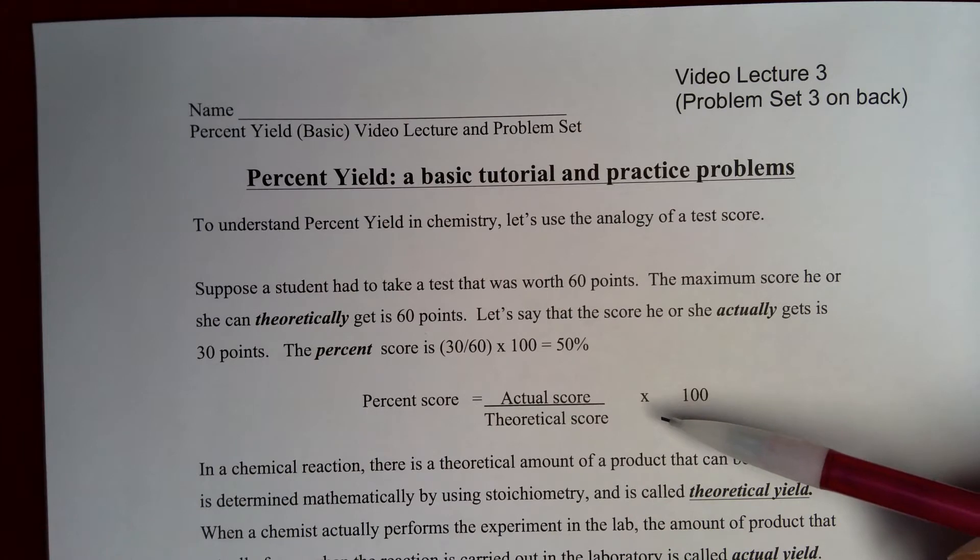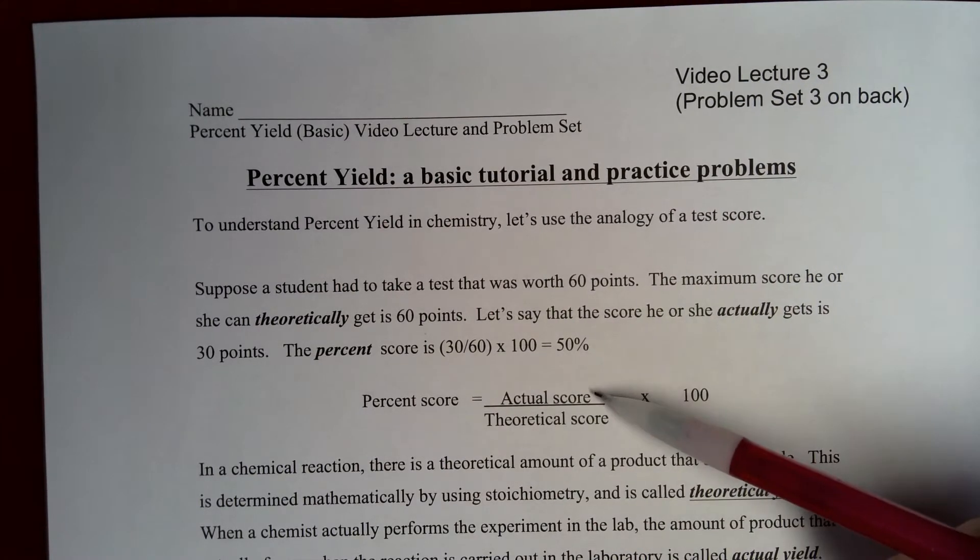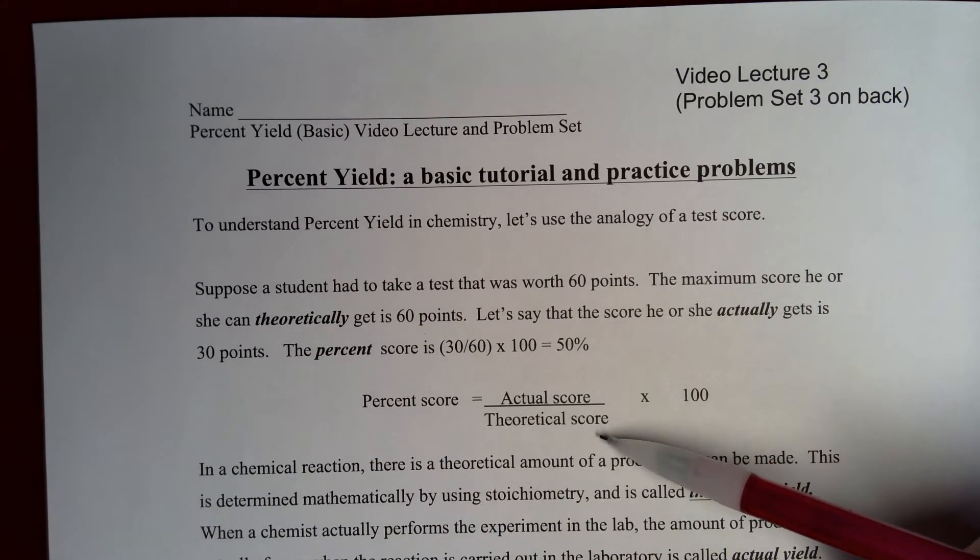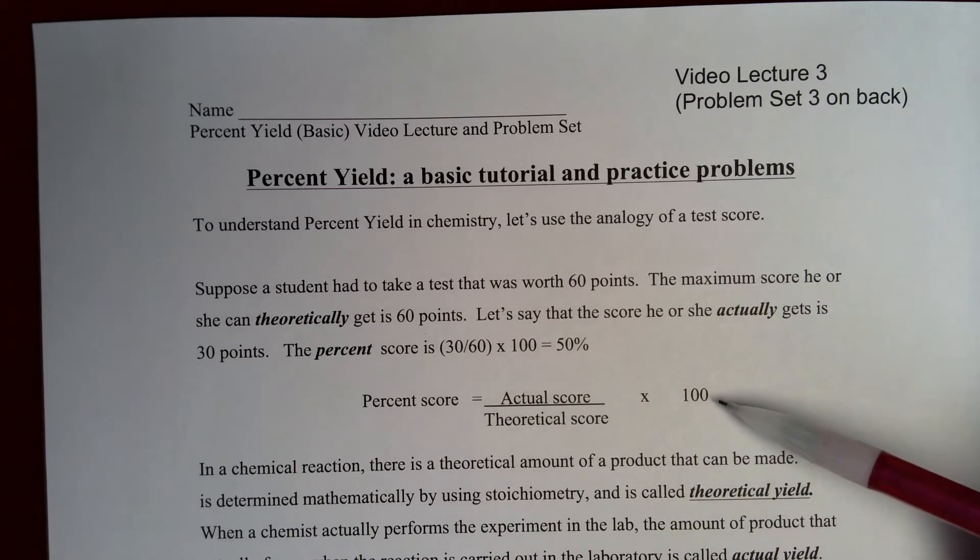This can be captured in the equation of your percent score is equal to your actual score over your theoretical score of 60, and then of course multiplied by 100 to put it into percentage form.